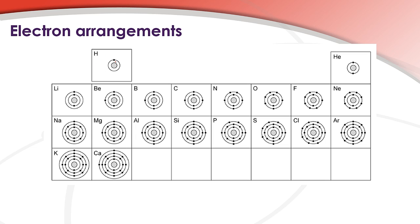Starting with hydrogen, hydrogen has one electron in the first energy level so the electron arrangement for hydrogen is one. Next on to helium, it has two electrons in the first energy level. The electron arrangement is two.